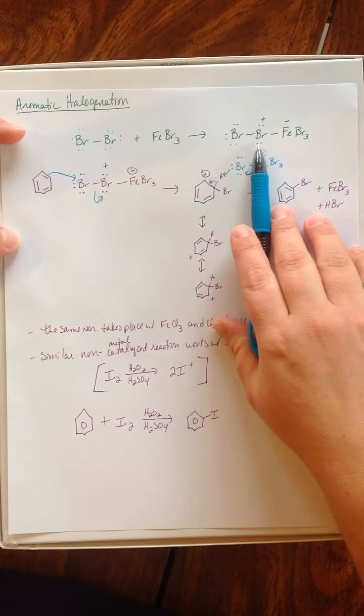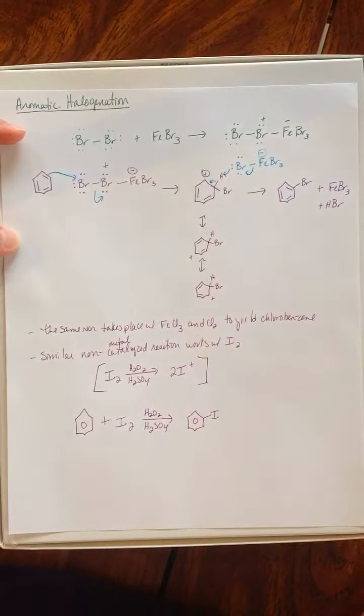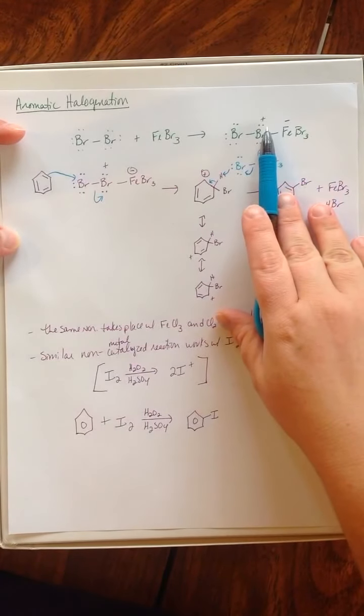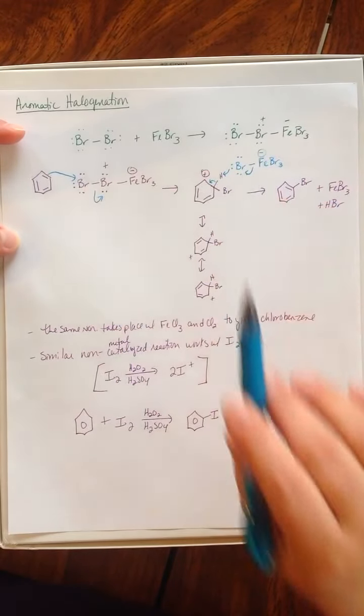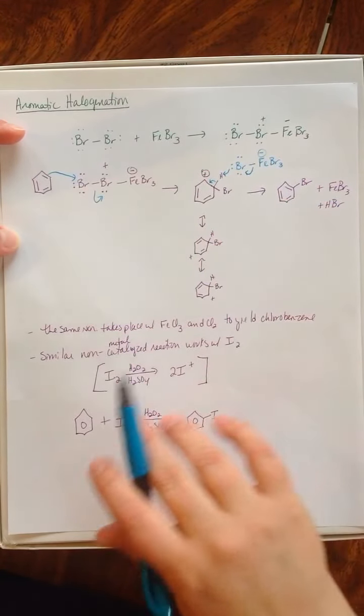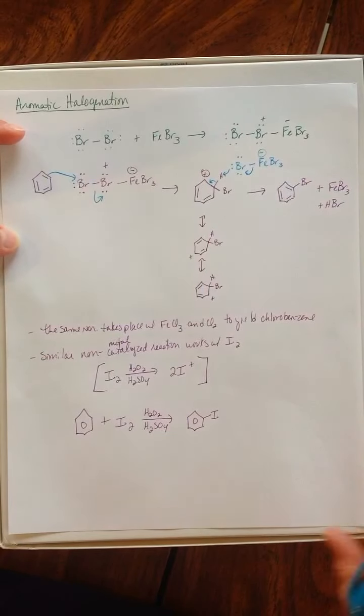leaving a positive charge on that bromine and a negative charge on the iron. The positive charge on this bromine kind of makes that guy kind of positive too. He's too occupied. He's got too much stuff around him right now to really be involved in that reaction.